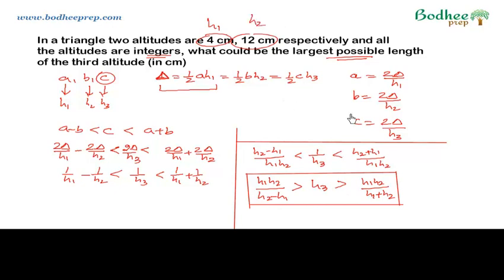Suppose h1 is 4 and h2 is 12, so h3 will be the third altitude. Let us substitute the corresponding values.